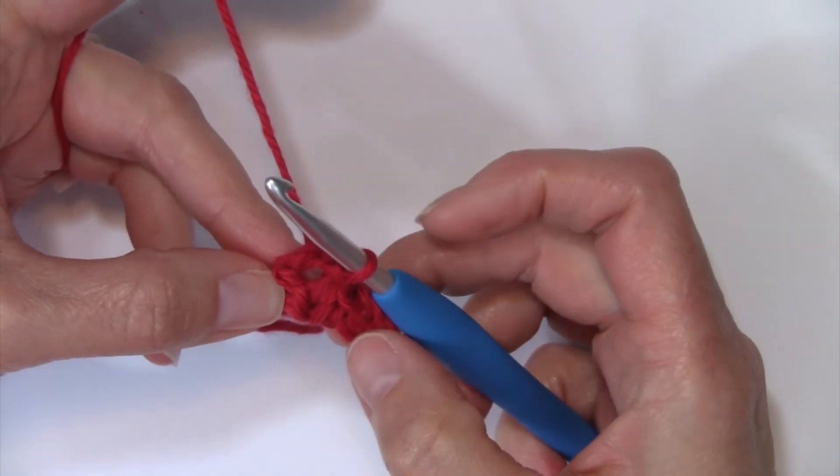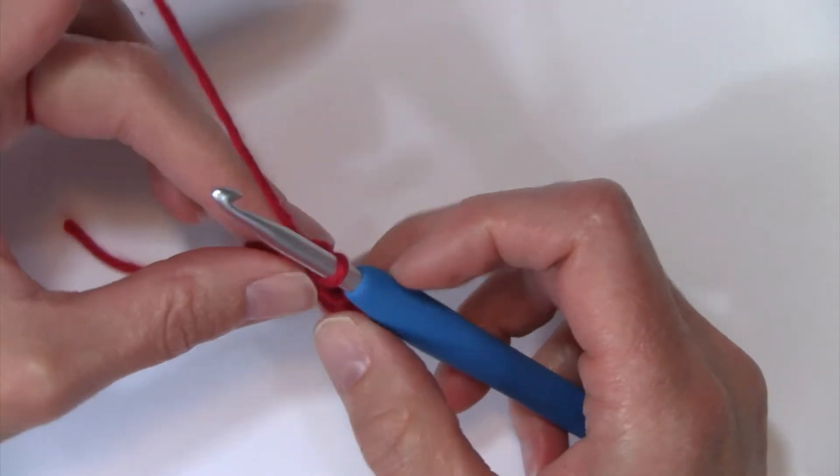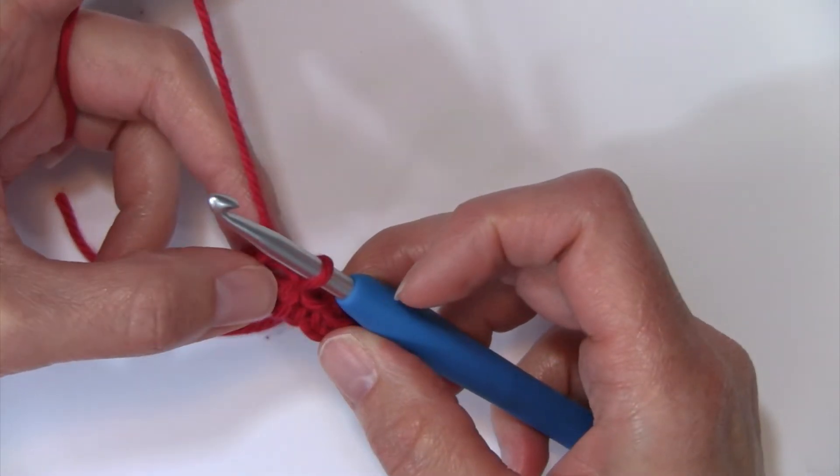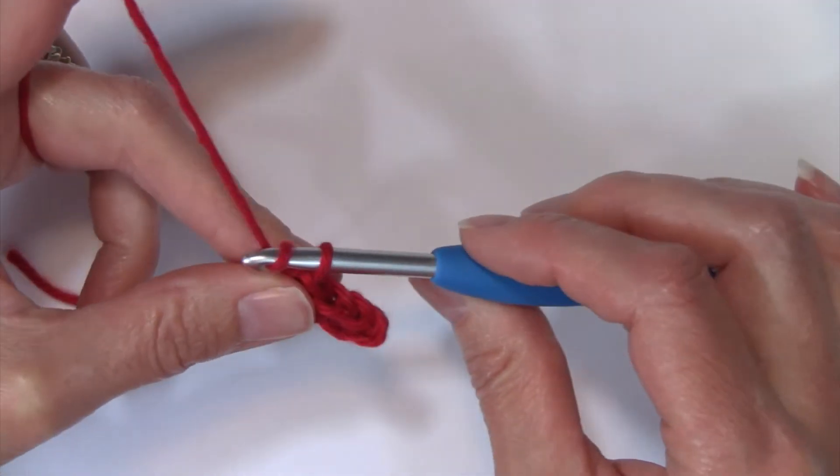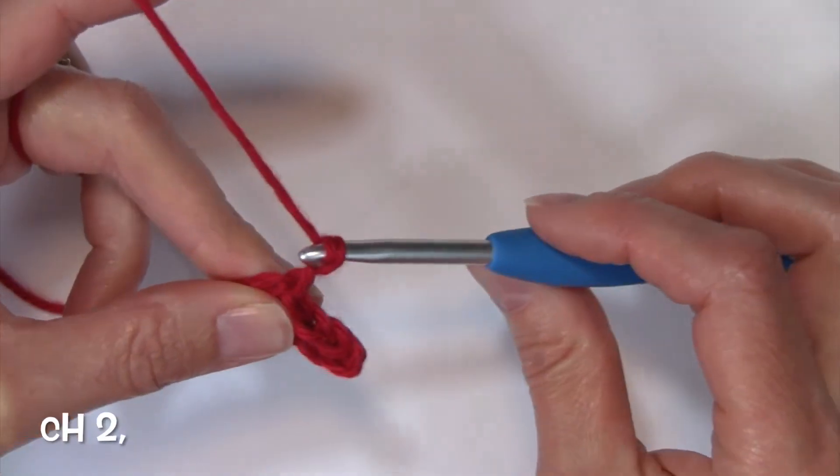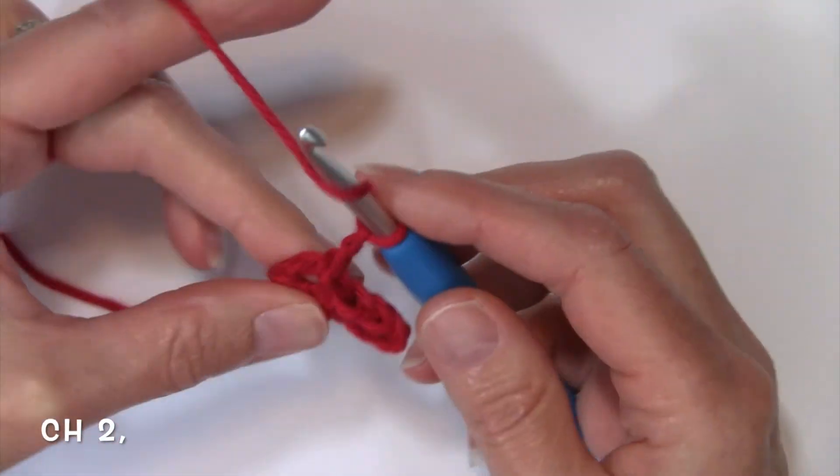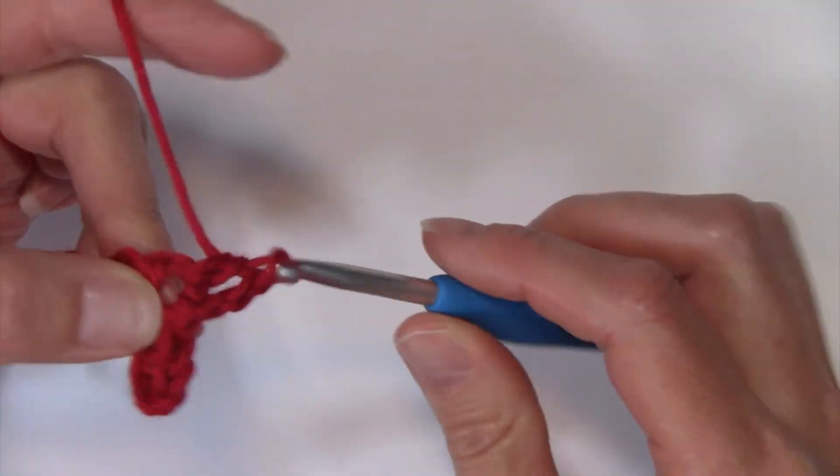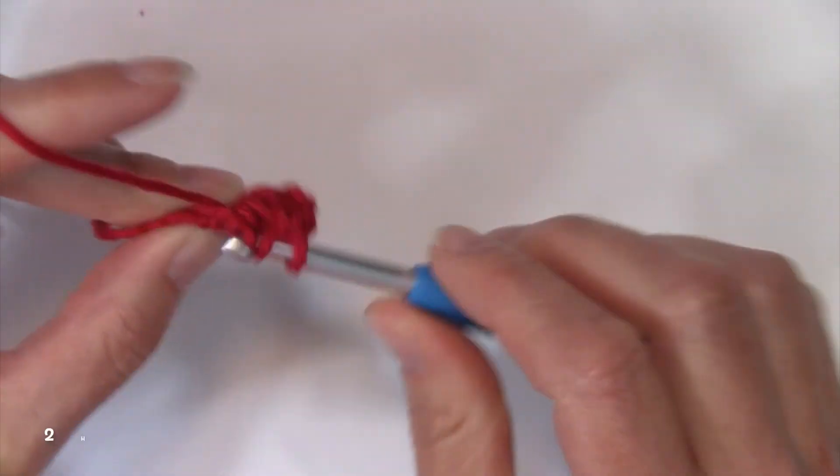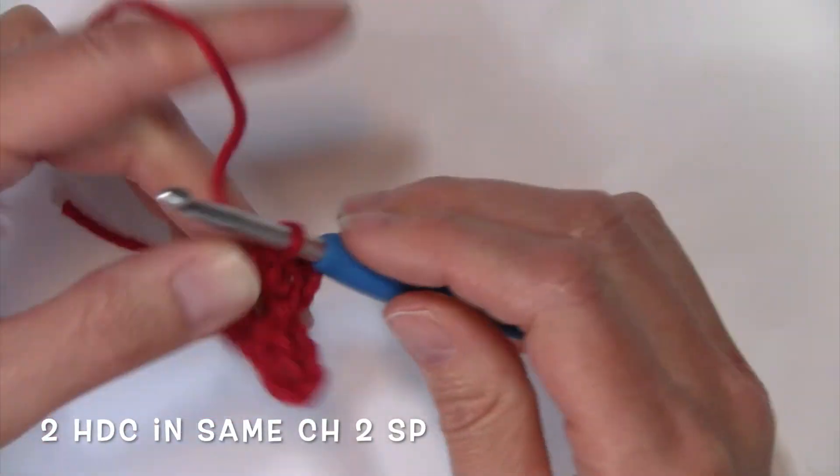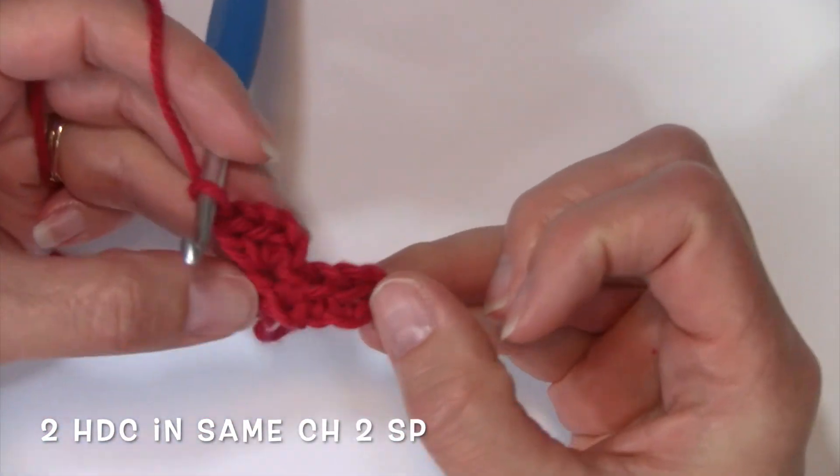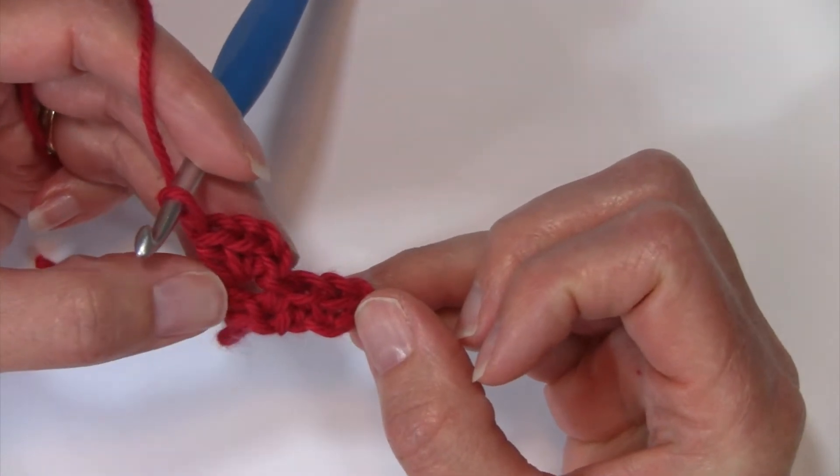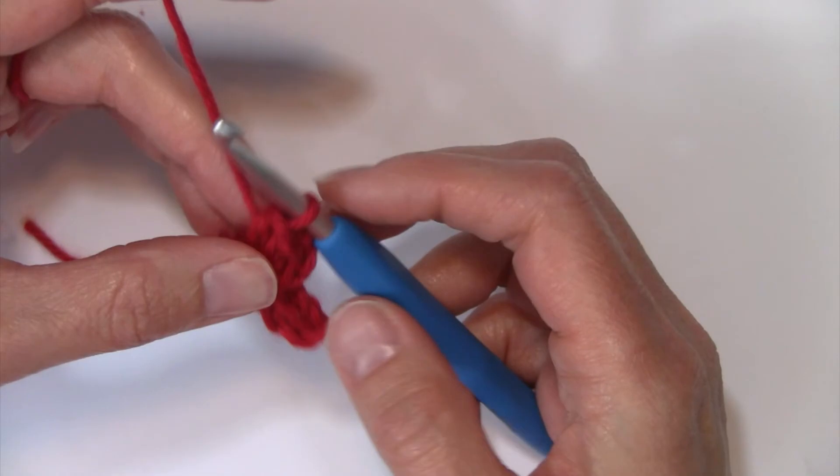So there's my first block of the second row made. Now I'm going to work my second block for that row by chaining two, one and two, and working two half double crochets into that same chain two space. So again, each block is made up of your chains plus two half double crochets to complete your block.